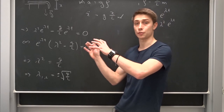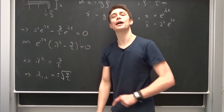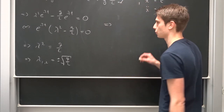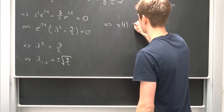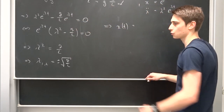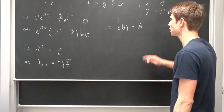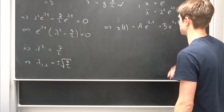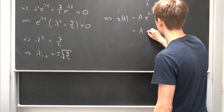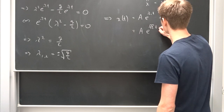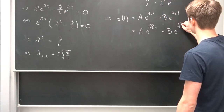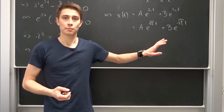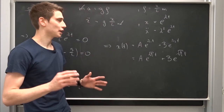We plug the roots into our auxiliary equation — I'll derive the full differential equation theory in the near future, so take this for granted for now. The general solution is: x(t) = A · e^(√(g/L) · t) + B · e^(−√(g/L) · t). Since it's a second-degree equation, we need two constants A and B.